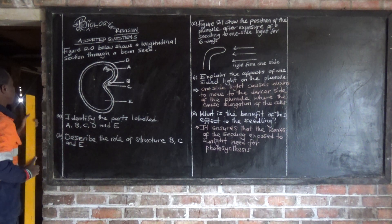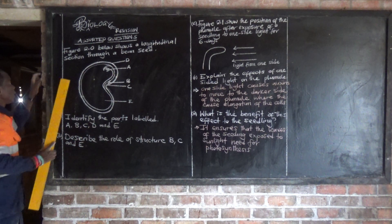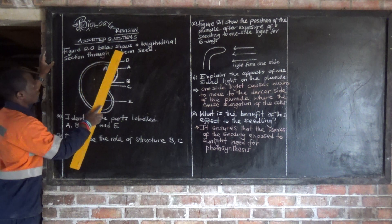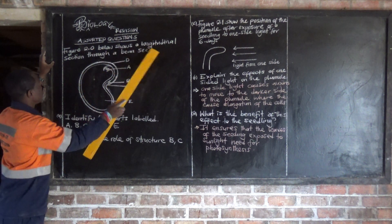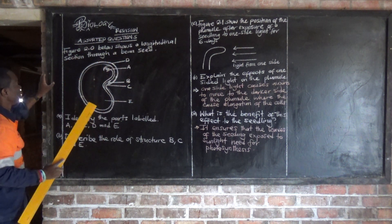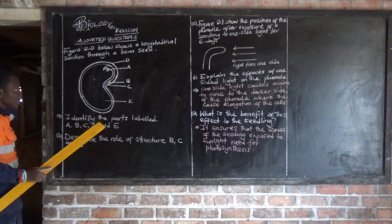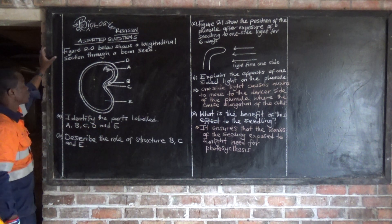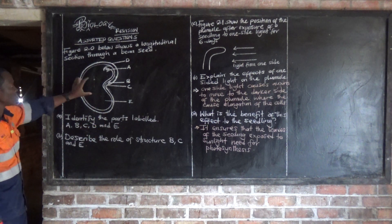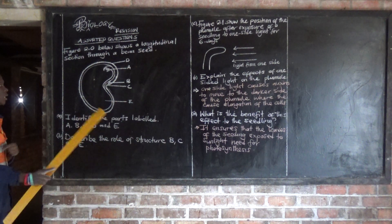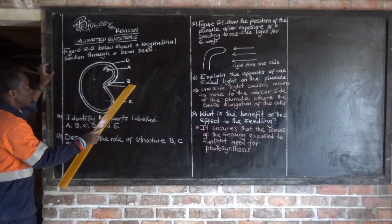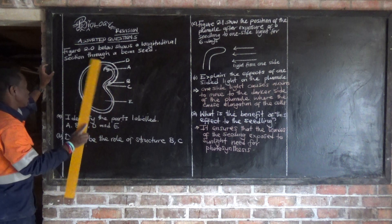Let's look at question number two. It says figure 2.0 below shows a longitudinal section through a pin seat. So we have been provided with a pin seat which has been labeled A, B, C, D, and E.